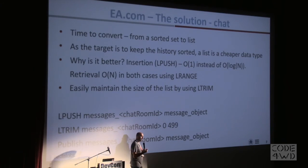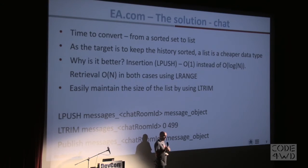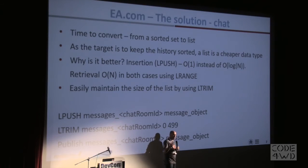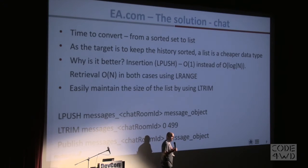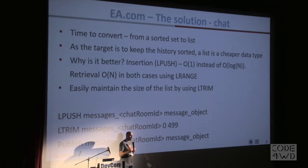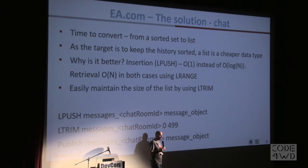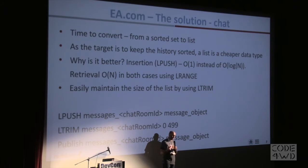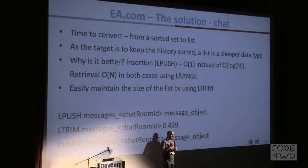To help them, we first made a small architectural change: instead of saving all the messages in history in a sorted set, we decided to save it in a list. A list is basically a linked list where you insert objects from the left or right, and Redis assures you it stays ordered. You can also include the timestamp in the key name. The reason we chose a list over a sorted set is simple: pushing an element to a list is O(1), whereas adding to a sorted set is O(log n) because you have to find the right insertion position.